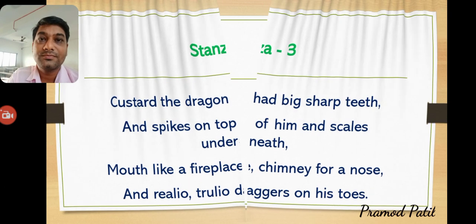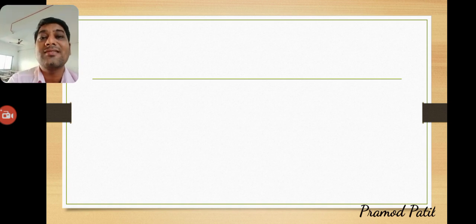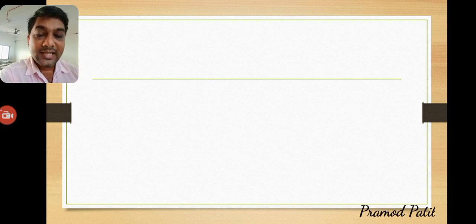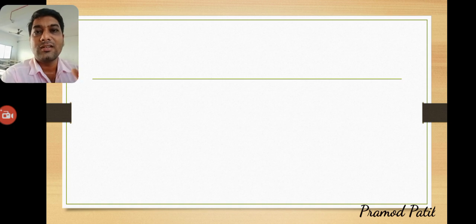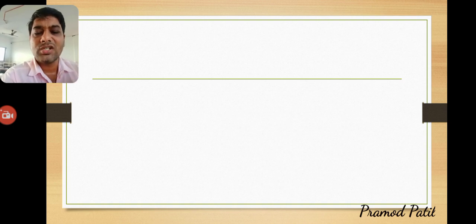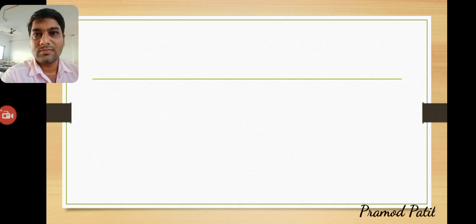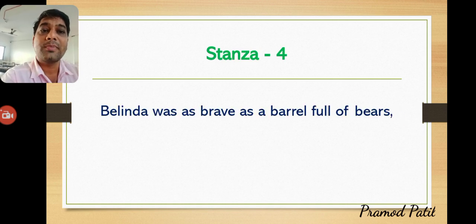Still, despite all these dangerous features, the dragon is unaware of his own power. This dragon is compared with middle-class society, which has great features and the power to change a nation, yet remains unaware. Examples include the French Revolution, Russian Revolution, and even the Indian freedom movement — middle-class people took great part and changed the complete scenario of the nation.